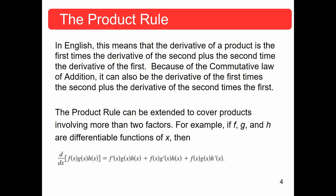Because of the commutative law, it can be the other way around. It could be the derivative of the first times the second, plus the derivative of the second times the first. It really doesn't matter how you do it, as long as you recognize that it's taking the derivative of one times the other, plus the derivative of the other times the first. And it can be extended to cover as many products as you need to.